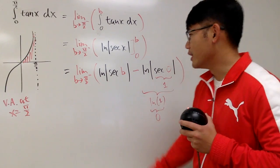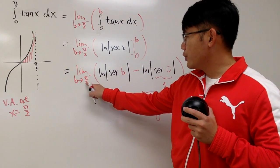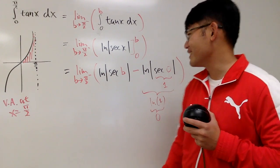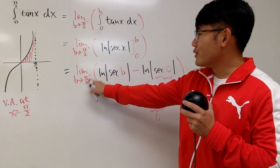Well, here is the deal. If you put pi over 2 in here, secant of pi over 2 is undefined. So, you have to do it carefully. That's why we say it's pi over 2 minus.